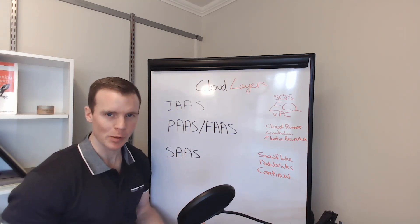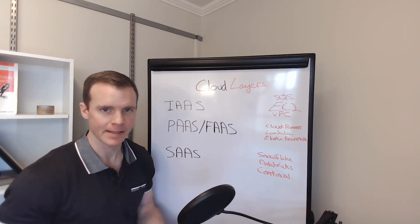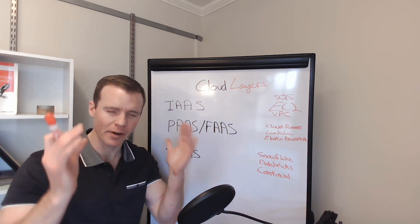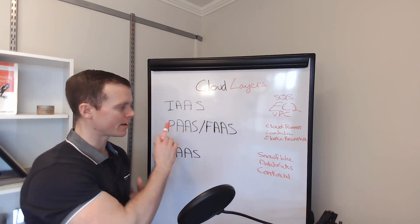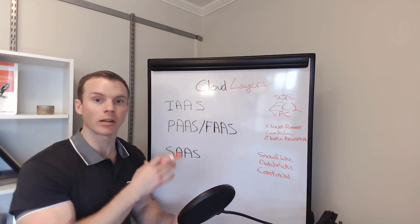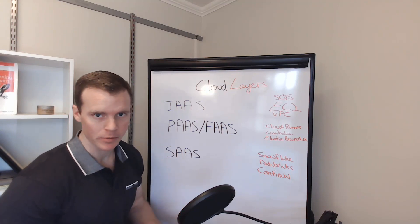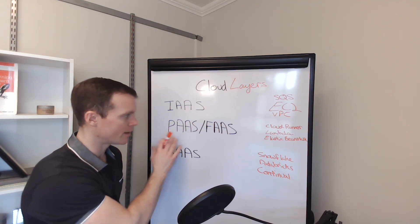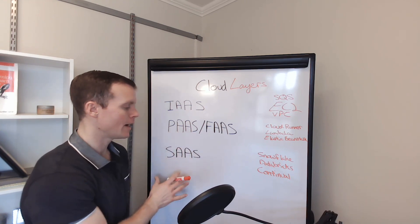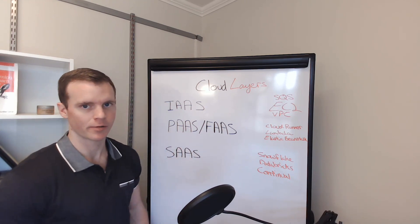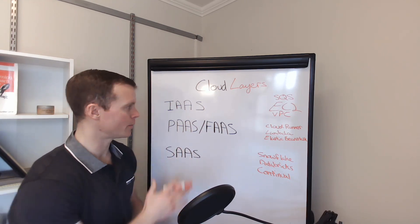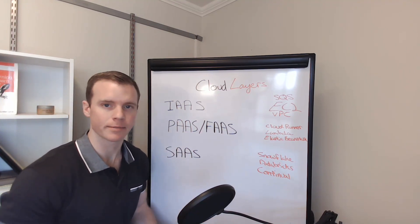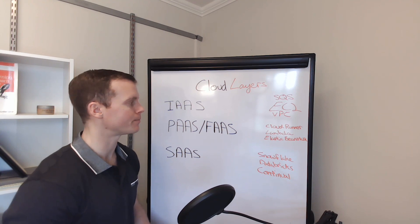When you think about the cloud from an end user perspective — a data science and ML perspective — there's a bunch of different things you can do, with weird names that are very confusing. One useful lens is to break things down into infrastructure as a service, platform or function as a service, and software as a service. What are the different things available in these three big buckets, and how does it help you as a data scientist, ML engineer, or a person trying to get something done?